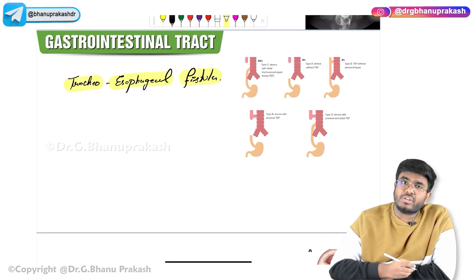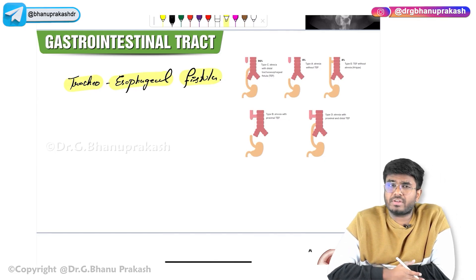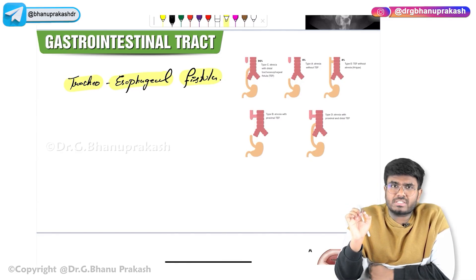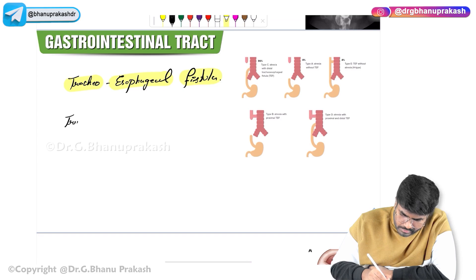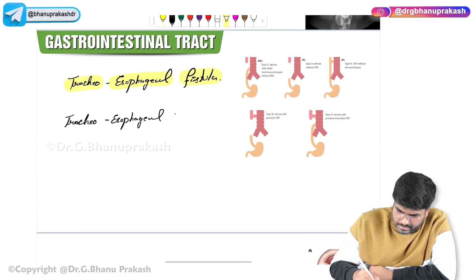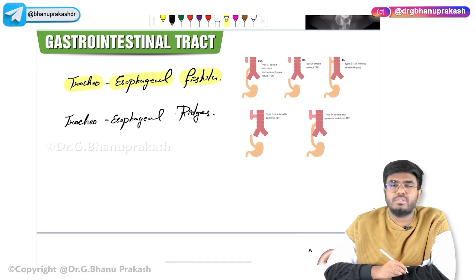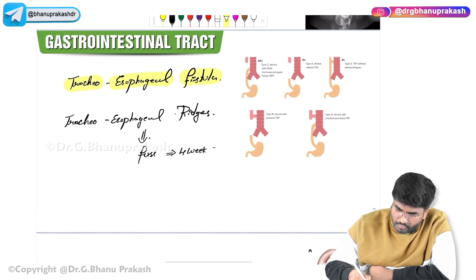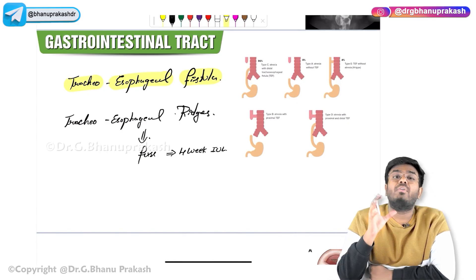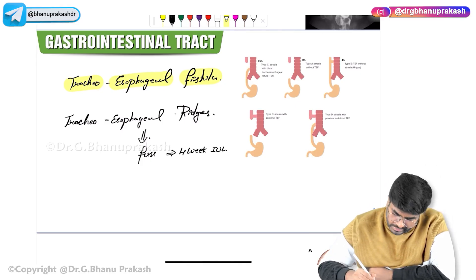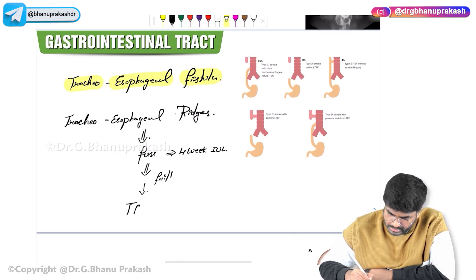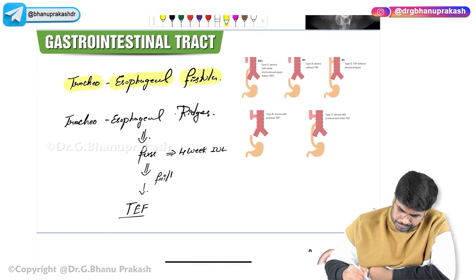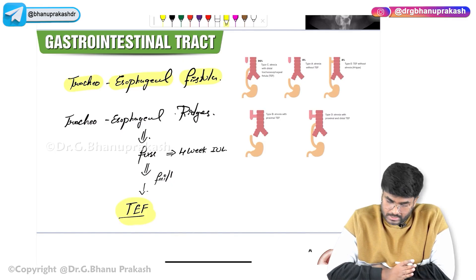Normally during intrauterine life, by four weeks, the tracheoesophageal ridges — these are embryological structures — have to fuse. Failure of fusion of the tracheoesophageal ridges by four weeks of intrauterine life causes tracheoesophageal fistula. The problem is in the fusion of the tracheoesophageal ridges.